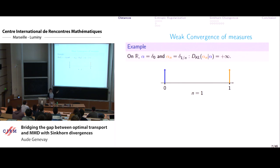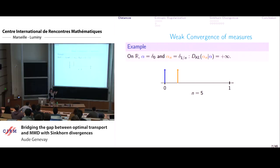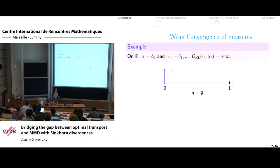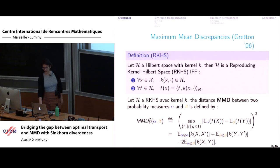A big issue with phi divergences — illustrated here with the KL divergence — is that they don't metrize the weak convergence of measures. For example, you have a target Dirac at zero in blue, and a sequence of Diracs located at 1/n. As n increases, your orange Dirac approaches delta zero. But the KL divergence between them is always equal to plus infinity, so the gradients give you no information.